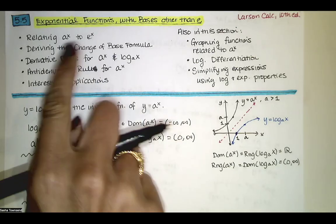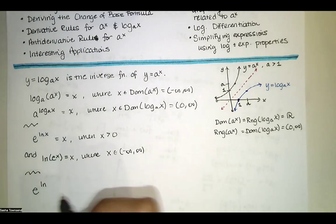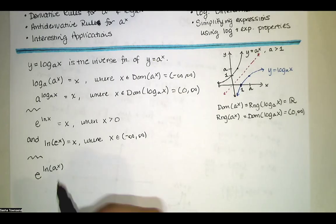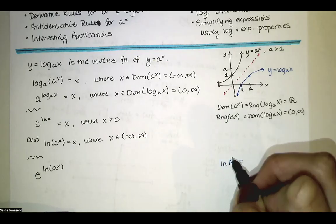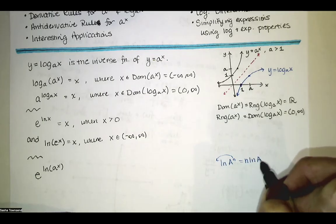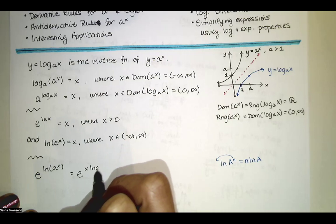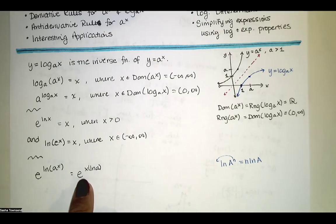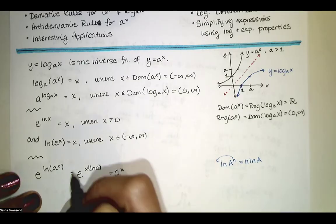With that in mind, we can relate a to the x to e to the x relatively simply. We know e raised to the natural log of a to the x is a to the x, just by definition, because those two undo each other. Now using the log property that the natural log of a to the n equals n times natural log of a, we can bring that exponent x out front. This gives us e to the x times natural log of a. Since a is just a constant, this is a to the x equals e to the x times natural log of a, and that's the identity we'll use.